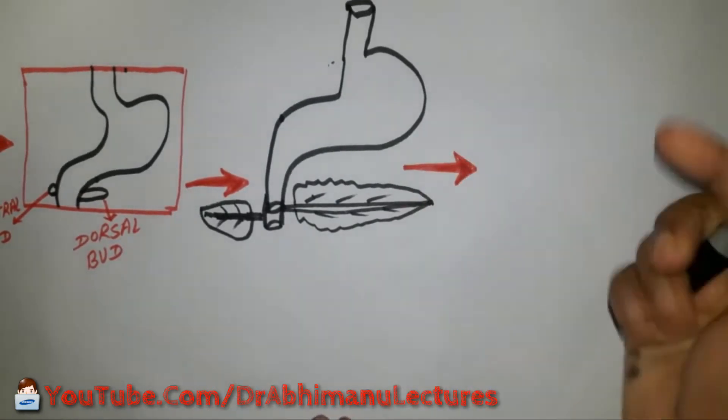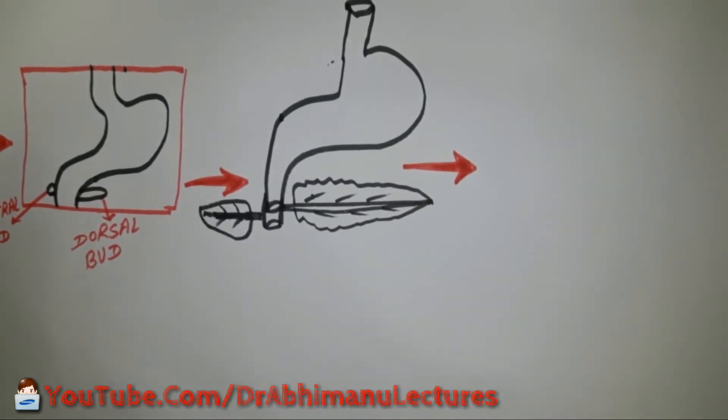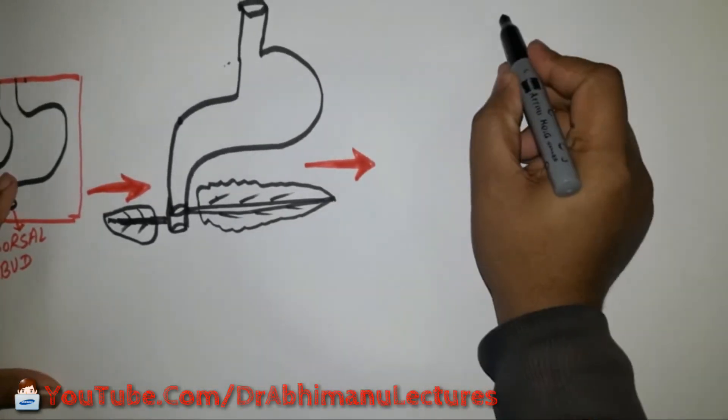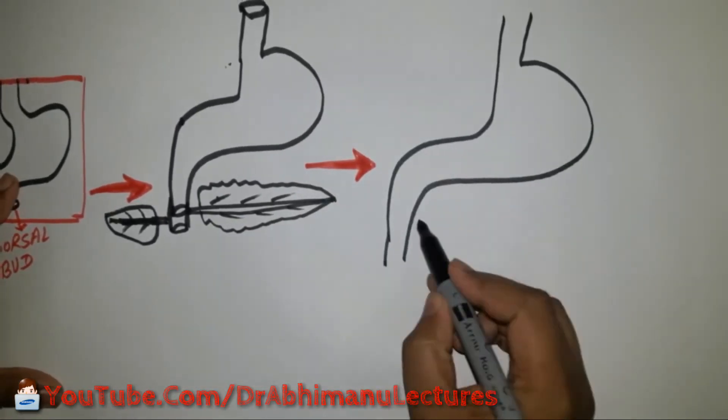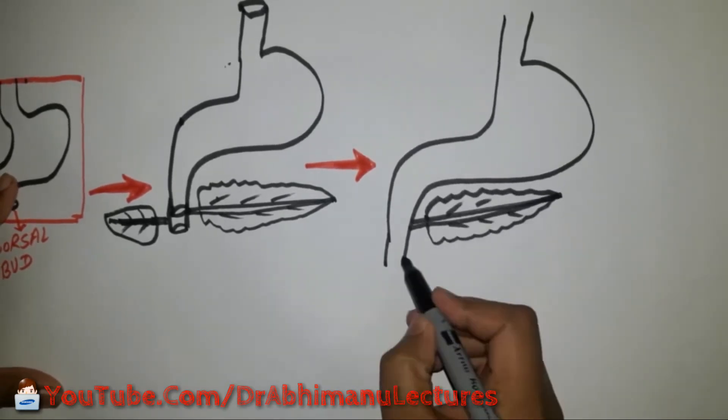When the duodenum rotates to the right and becomes C-shaped, the ventral pancreatic bud is on the right and dorsal pancreatic bud is on the left of the duodenum.